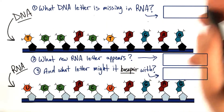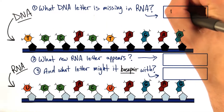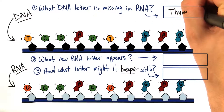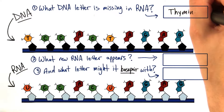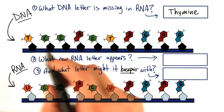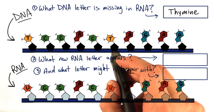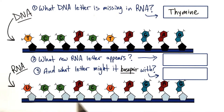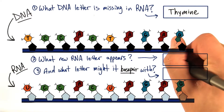So what DNA letter is missing in RNA? Thymine. You'll notice that thymine, represented by T, can't be found here in the RNA sequence. But instead, we have a new letter: U.